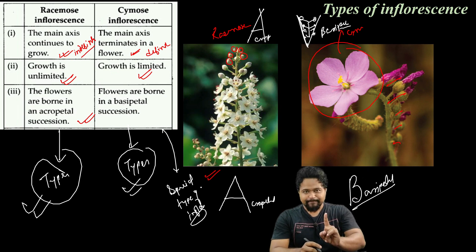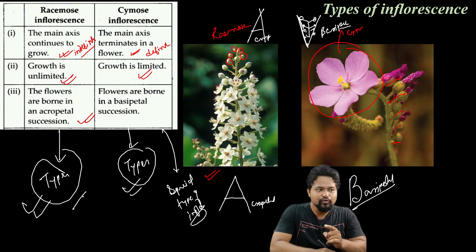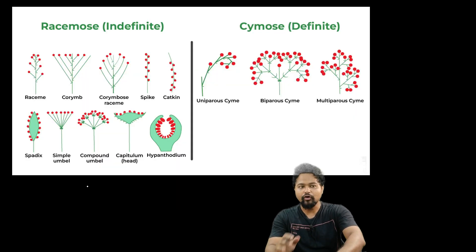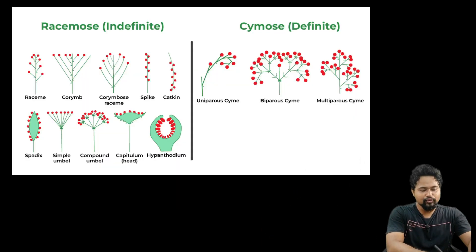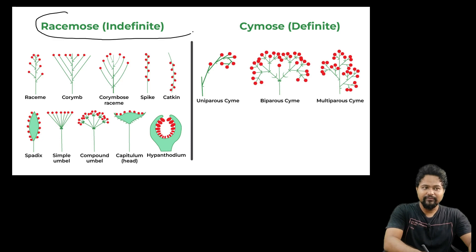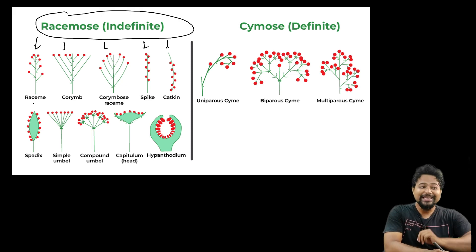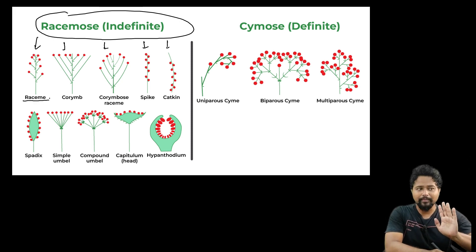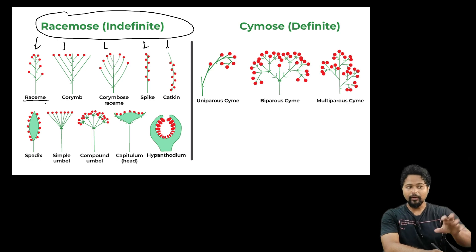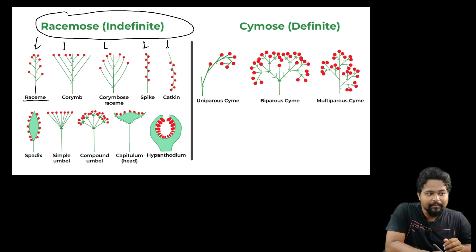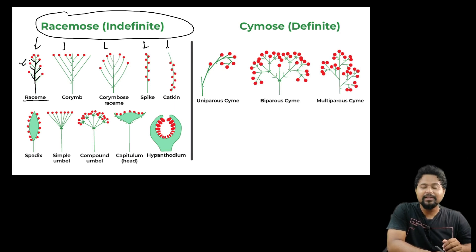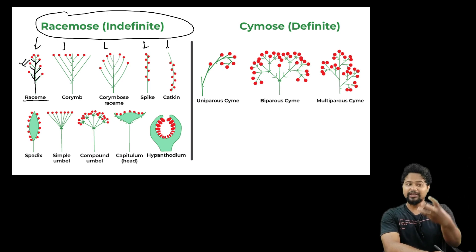Let's start the first lesson. Racimose type of inflorescence — racimose is indefinite. The first type is raceme. Raceme is the main peduncle, and the flowers are arranged in acropetal succession. This is a simple type of racimose inflorescence.